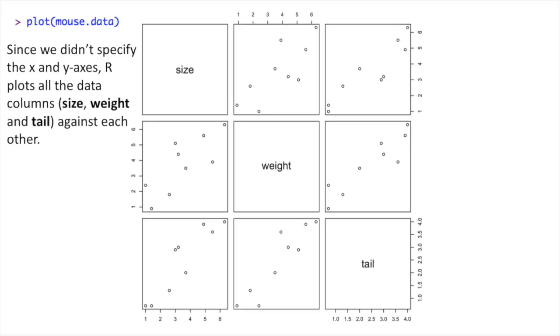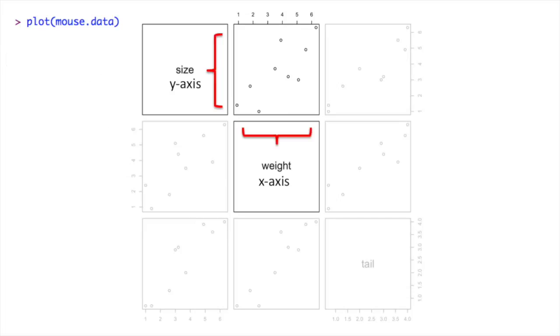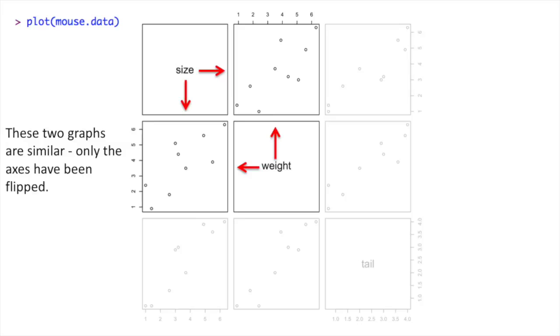This is super useful because it generates all the plots we need to decide whether doing a multiple regression with this data makes sense or not. This graph plots size on the Y axis and weight on the X axis. This is what we used before in the simple regression. Down here, we have the same exact data. However, this time size is on the X axis and weight is on the Y axis. These two graphs are similar. Only the axes have been flipped.